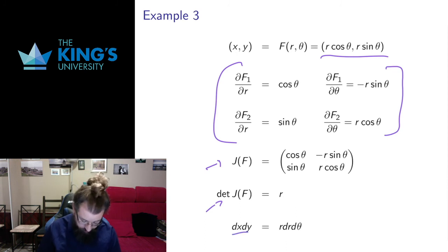So this means the dx dy, the variable, the infinitesimal area in the original variables, is r dr d theta. And I want to give you a visualization for why this should be scaled by the radius.